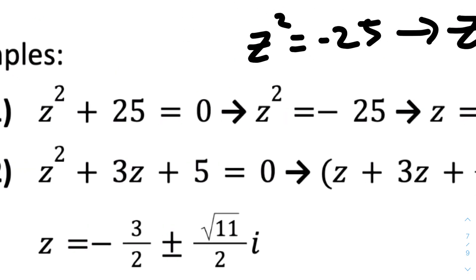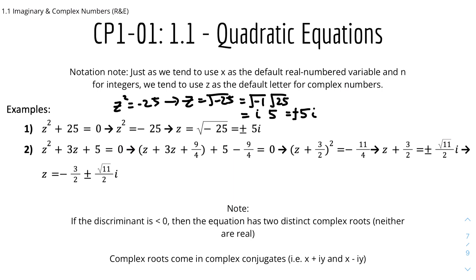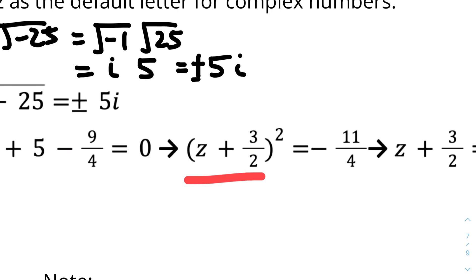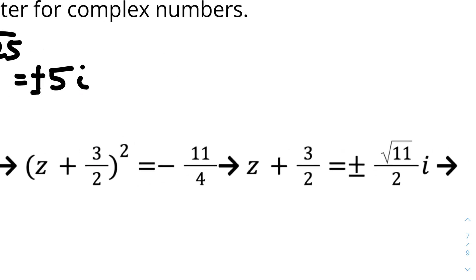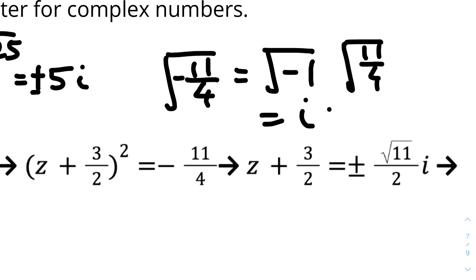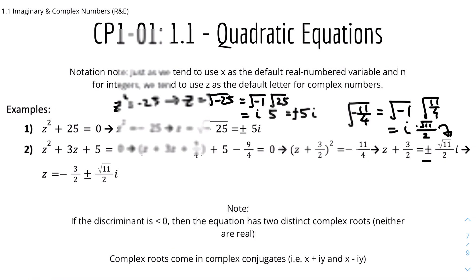For the second example, we have z² + 3z + 5 = 0. We can either complete the square or use the quadratic formula. Using completing the square, I get (z + 3/2)² = −11/4. Square rooting both sides: z + 3/2 = ±√(11/4) × i. Since √(−11/4) = √(−1) × √11 / √4 = i√11 / 2, we get z + 3/2 = ±(√11 / 2)i. Therefore z = −3/2 ± (√11 / 2)i.